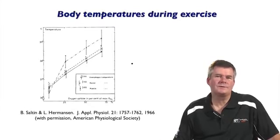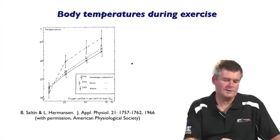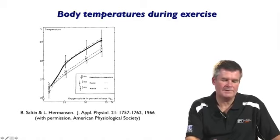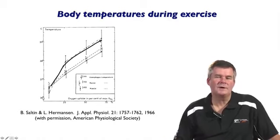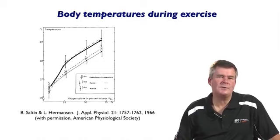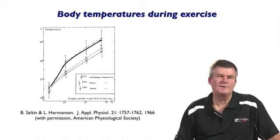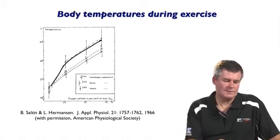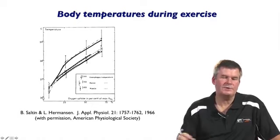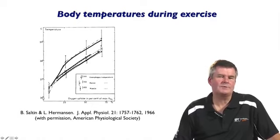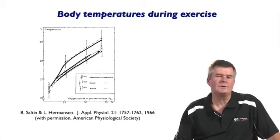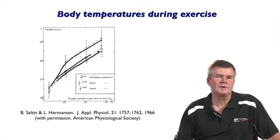Looking at other tissues, here is the increase in muscle temperature expressed as a percent of oxygen uptake. As you increase the exercise intensity, you increase the muscle temperature. Here are the rectal temperature and esophageal temperature, which are relatively close. The rectal temperature is sometimes slightly higher than the esophageal temperature, because it's influenced by heat returning from the exercising legs.